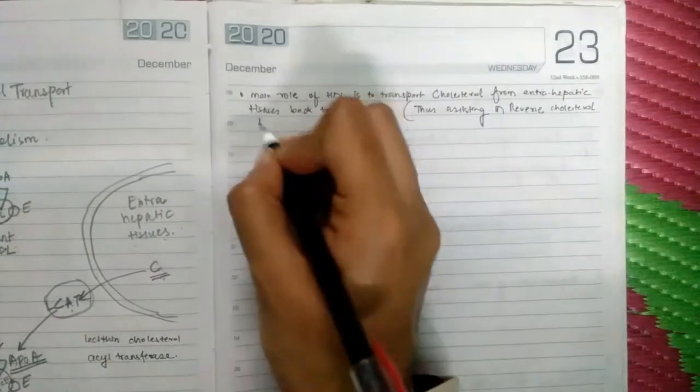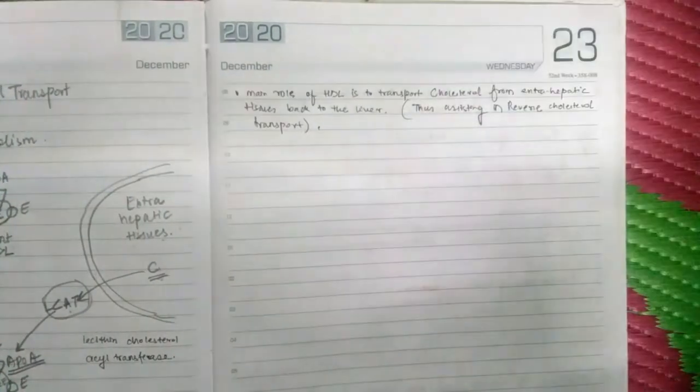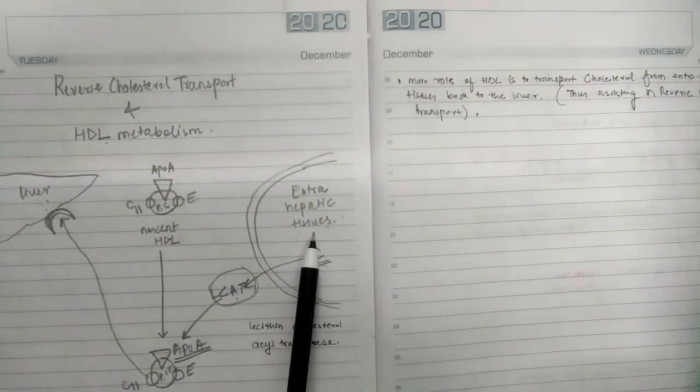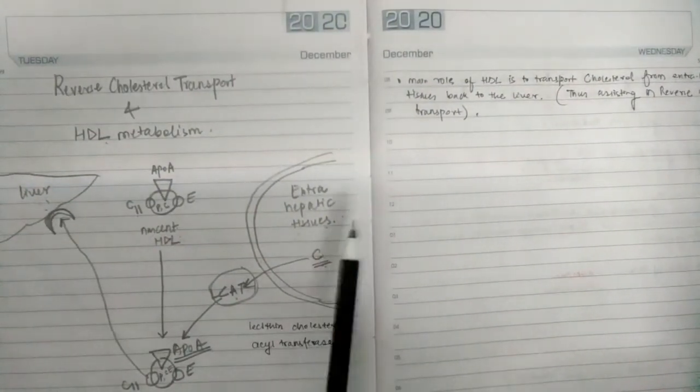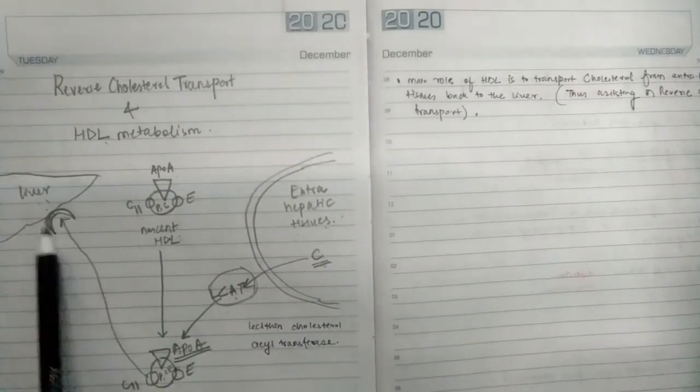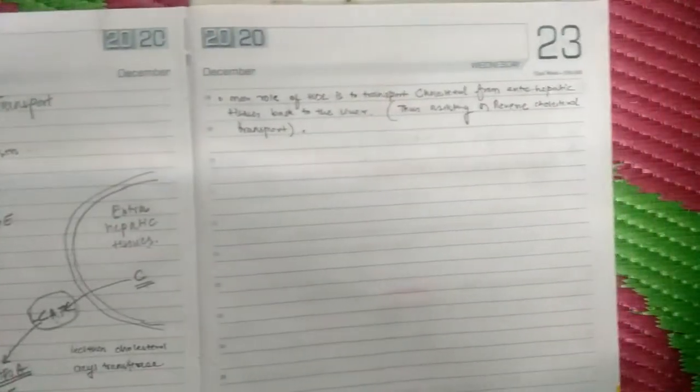Now why am I saying reverse cholesterol transport? Because the actual transport of cholesterol is from the liver to the extra hepatic tissues, but HDL is assisting in the reverse cholesterol transport—that is, the cholesterol from the extra hepatic tissues will go back to the liver. Now for understanding this we have to understand LCAT enzyme.